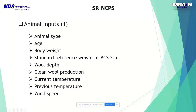The other inputs include animal type, age (representing the mean age of the group being fed, with a decrease in maintenance requirements for older animals), and body weight. There is a standard reference weight at body condition 2.5 — instead of mature body weight, we work with this standard reference weight, which is extremely important in determining requirements. Body condition score matters because gain composition is estimated as percentage of fat, protein, water, and minerals relative to this standard reference weight.